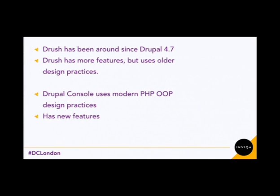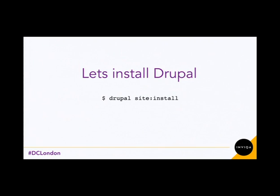So what I've done for this talk is I've installed a local version of Drupal using Drupal VM on my machine. The first thing I'm going to do is I'm going to install Drupal using Drupal Console — using the command `drupal site:install`. I have luckily pre-recorded everything I've done, so there's no live demos here.